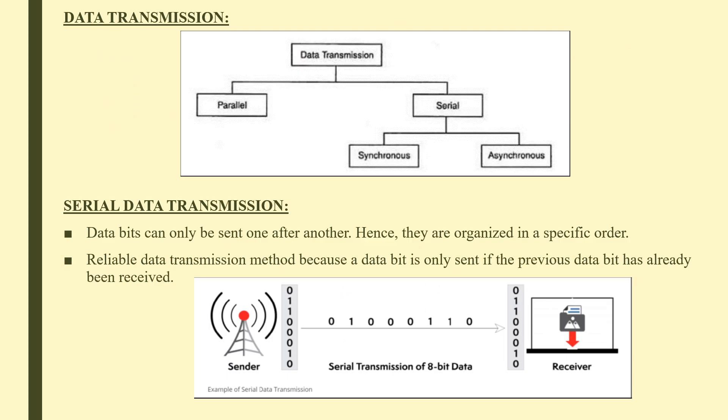Data transmission refers to the movement of data in the form of bits between two or more digital devices. This transfer takes place via some form of transmission media, for example coaxial cable, fiber optics, etc. Data transmission can be classified into parallel transmission and serial transmission, where serial transmission is further classified into synchronous and asynchronous transmission.